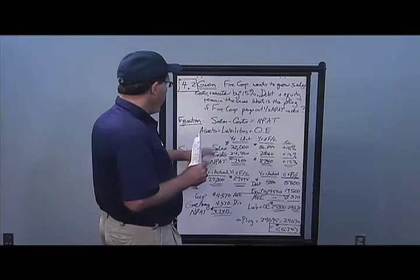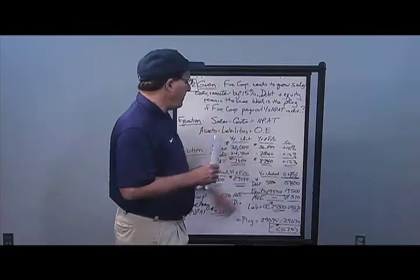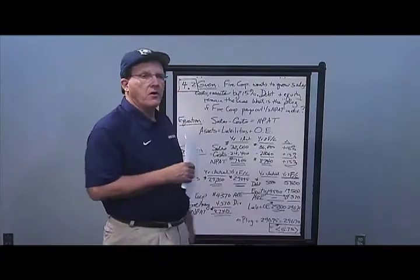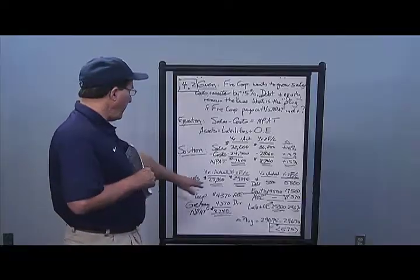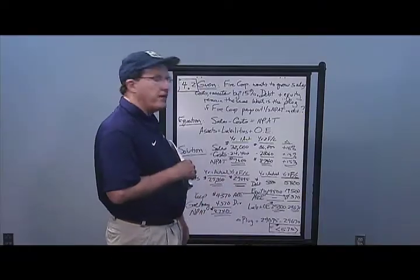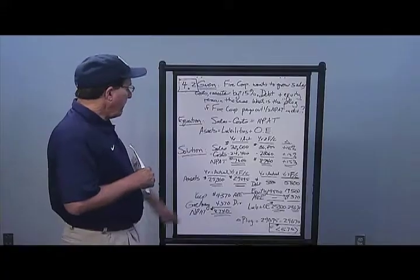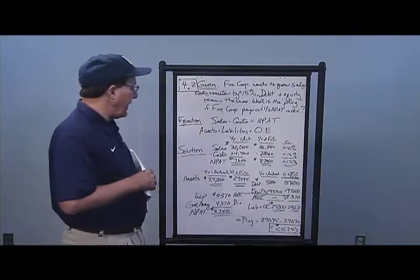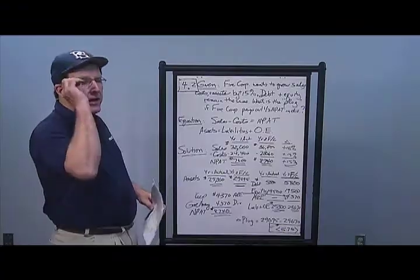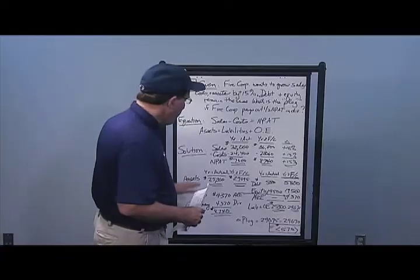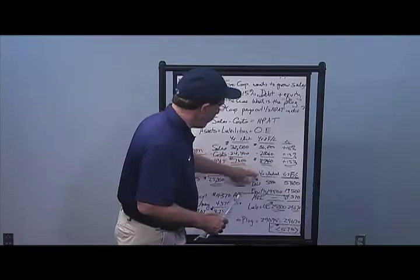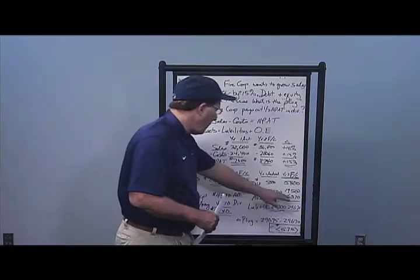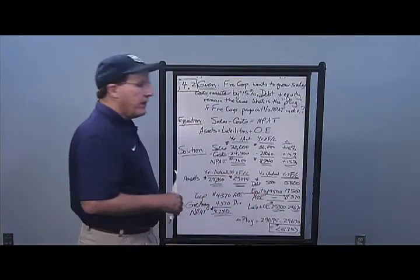On my income statement, everything goes up 15% as before. The left side of the balance sheet also goes up: assets from 25,300 to 29,095, just like the last problem. However, on the right side, debt and equity remain the same at 5,800 and 19,500. I bring in half of my net income — half of 8,740 — in the form of additions to retained earnings.